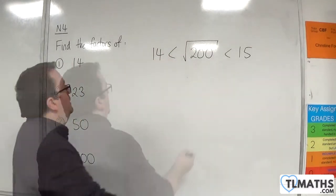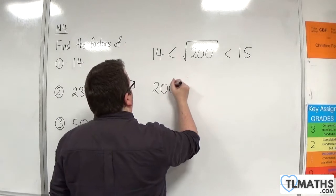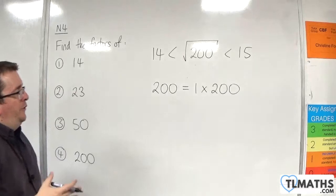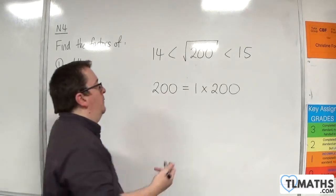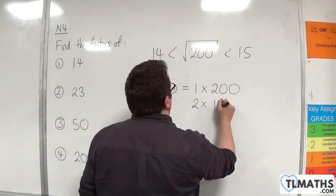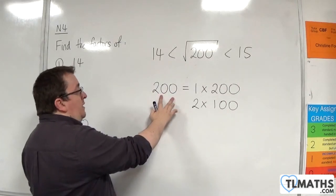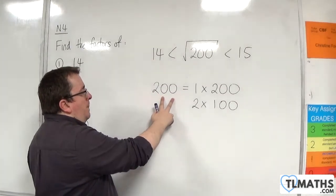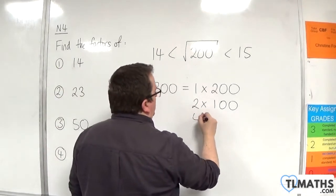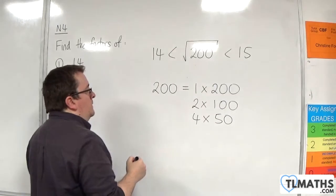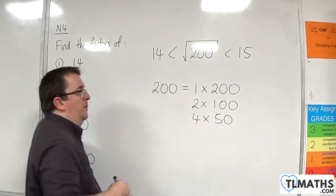So, 200 is, of course, 1 times 200. Now, 2 is going to go into 200 100 times. So, 2 times 100. Now, 3 isn't going to go into 200, but 4 will. 4 goes in 50 times, because we can divide 100 by 2 cleanly.